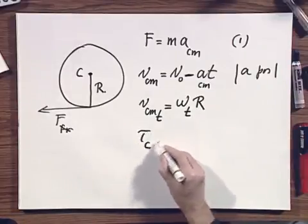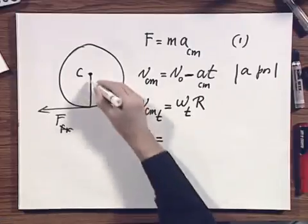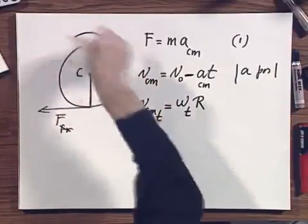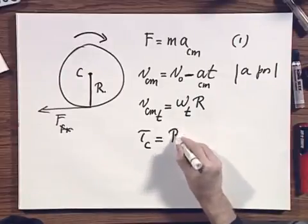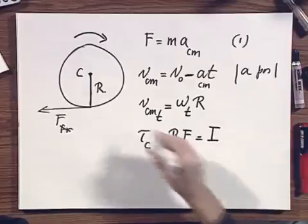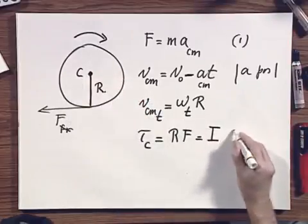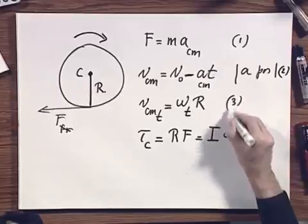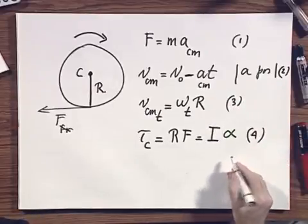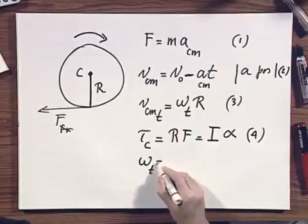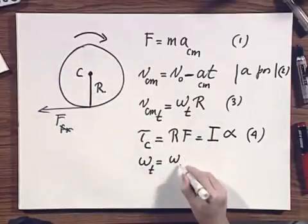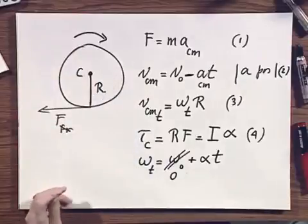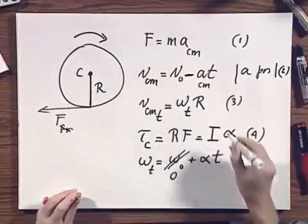Then I have that the tau relative to point C equals R times F. Torque is in this direction, that's why it will try to make omega increase in this direction. So that is R times F, and that is also by definition the moment of inertia about this axis times alpha, which is the omega DT. This is equation number two, this is equation number three, the situation is getting out of hand, this is equation number four. And then omega T, which is spun up, is omega zero plus alpha times T. Omega zero is zero at the moment of touchdown. And I have assumed here that A is constant and that alpha is constant.